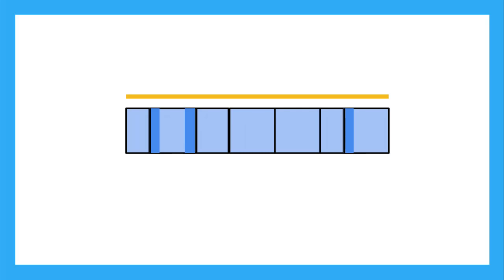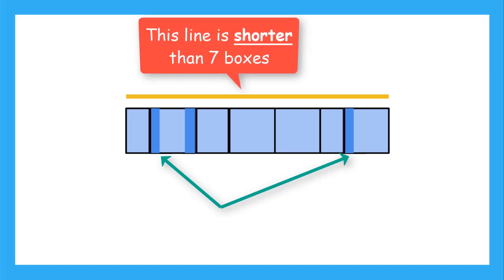Nope! Because you can see some of the boxes are overlapping. The yellow line is actually shorter than 7 boxes.